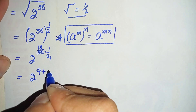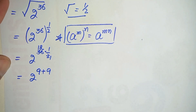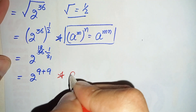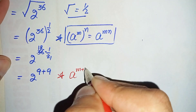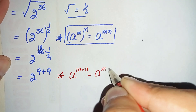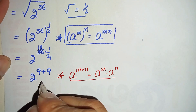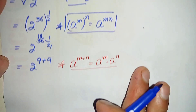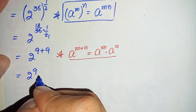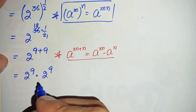Here we will use another exponential math property: a raised to power m plus n can also be written as a raised to power m times a raised to power n. Using this exponential math property, 2 raised to power 9 plus 9 becomes 2 raised to power 9 times 2 raised to power 9.